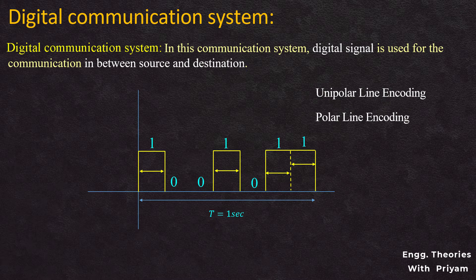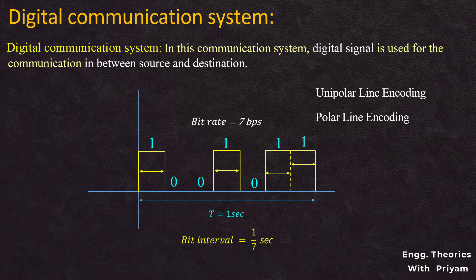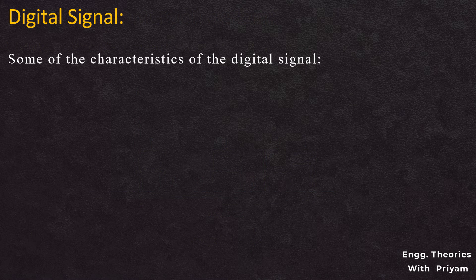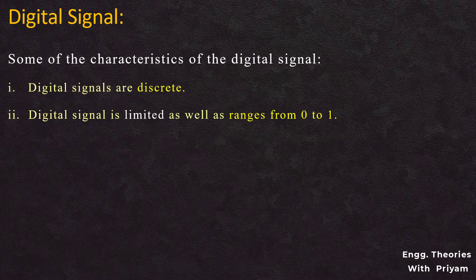Digital signals describe behavior with respect to bit rate and bit interval. Bit rate is the number of bits conveyed or processed per unit of time — if the signal processes 7 bits per second, the bit rate is 7 bps. The bit interval is the time required to transmit one single bit. If one second is required to transmit 7 bits, the bit interval is 1/7 seconds.